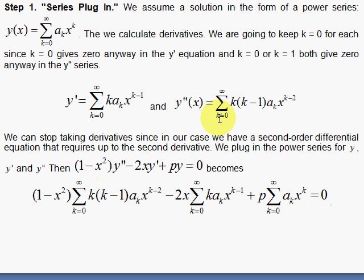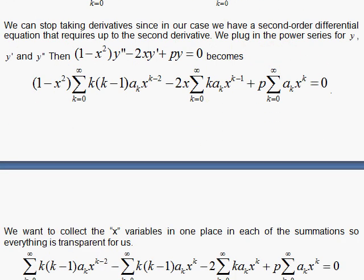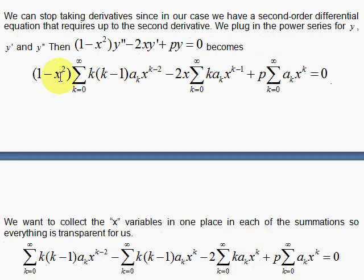So here is the differential equation of Legendre. We have (1 minus x squared) times the second derivative minus 2x times the first derivative plus p times y. Then we notice that this x squared here that's by itself, we'd like it to be collected so that all the x's are in one place in each of the terms.